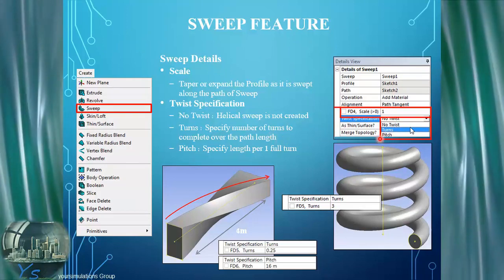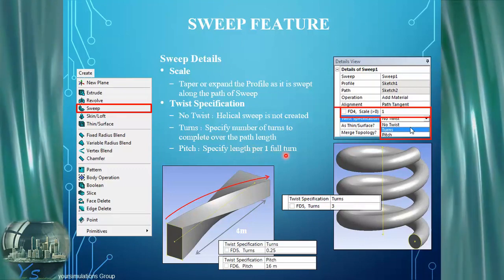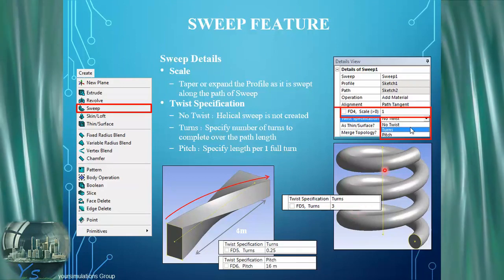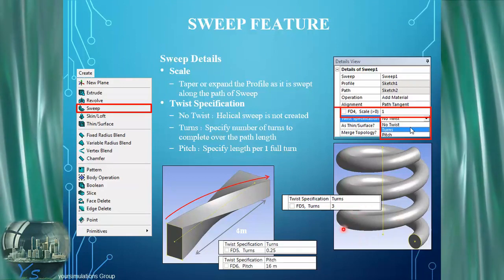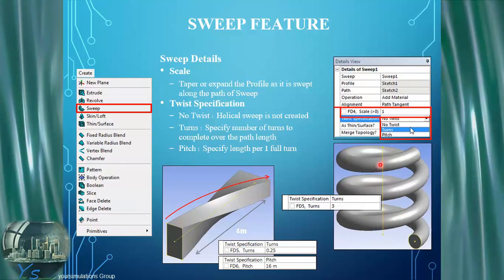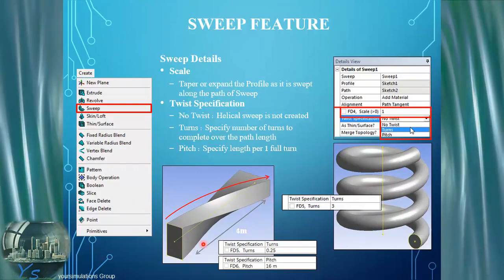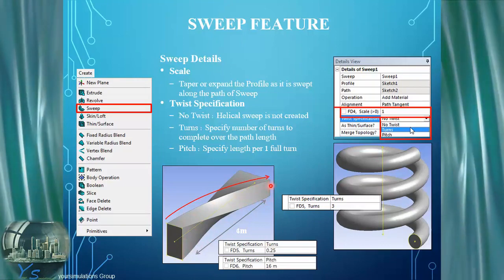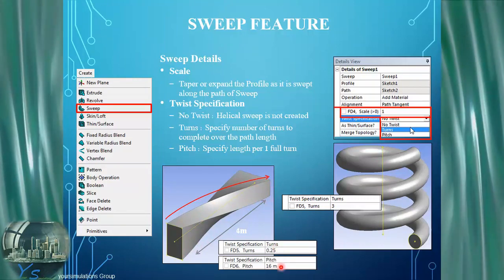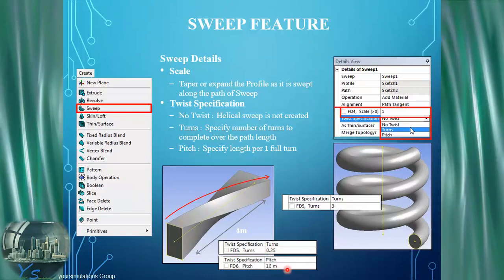We can also specify the length per one full turn in terms of the pitch. Here we can see the different options for the number of turns on this helix or spring coil — we have one, two, three turns available. And on this four metre twisted example we're specifying 0.25 as the number of turns and 16 metres as the pitch.